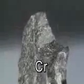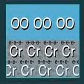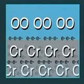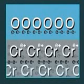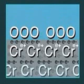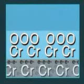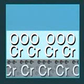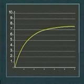Chromium forms a different sort of oxide, one that protects it from further oxidation. Chromium atoms at the surface ionise, and the electrons released reduce oxygen molecules in the air to oxygen ions. The oxygen and chromium ions then react to form chromium oxide.